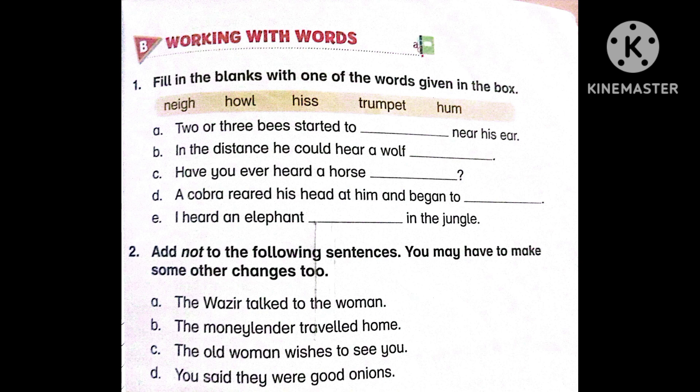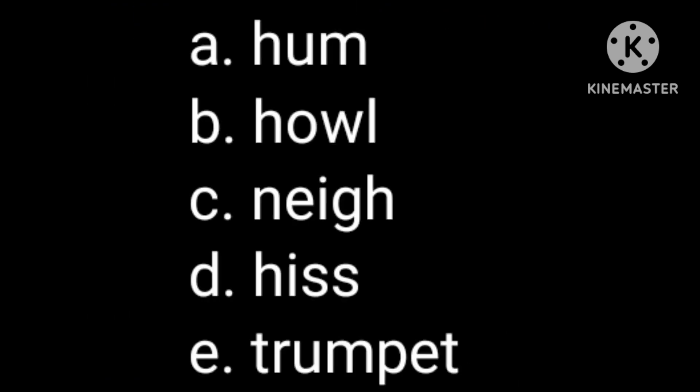A. Two or three bees started to hum near his ear. B. In the distance, he could hear a wolf howl. C. Have you ever heard a horse neigh? D. A cobra reared his head at him and began to hiss. E. I heard an elephant trumpet in the jungle.